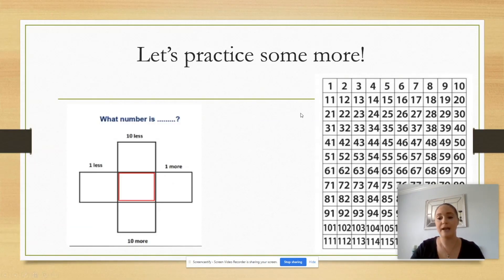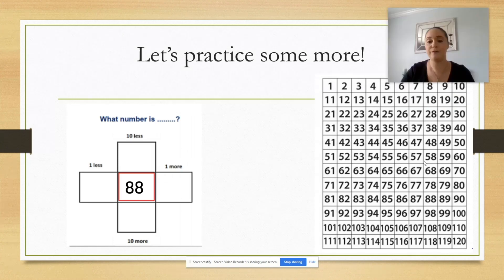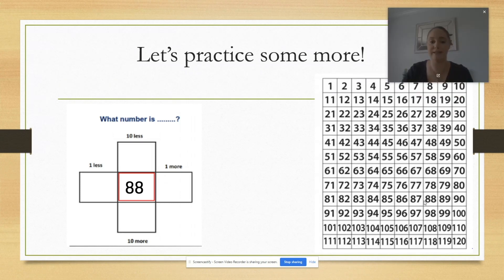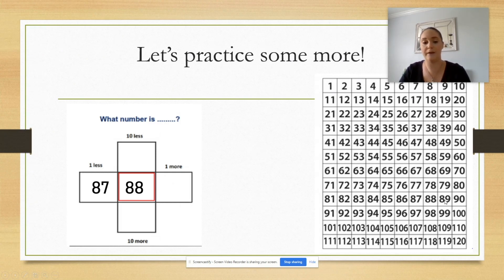So let's practice. If I had the number 88 and I wanted to find one less than 88, I could find it on the chart and count back one: 88, 87. If I had 88 and wanted to find one more, I could count up one or add one or move to the right: 88, 89.